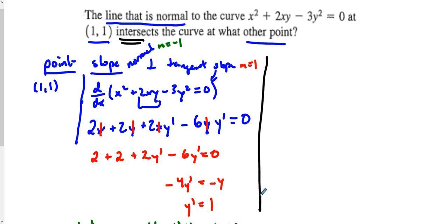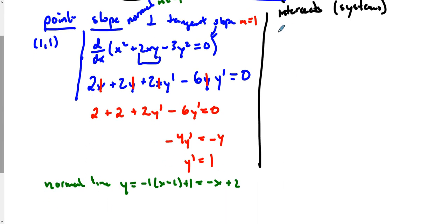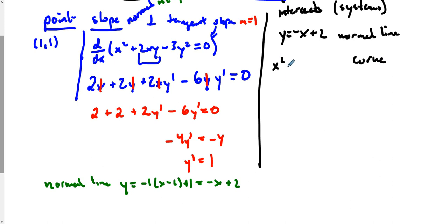Whenever you find intersections, we need to use a little substitution. We need to create a system and solve it. Since we have two variables, we need two equations. Our first equation is y = −x + 2, which is our normal line. Our second is the curve: x² + 2xy − 3y² = 0.